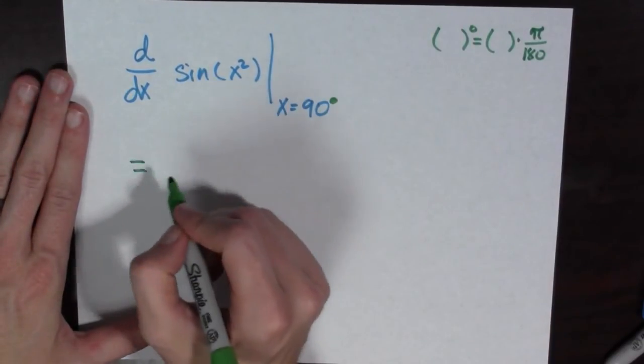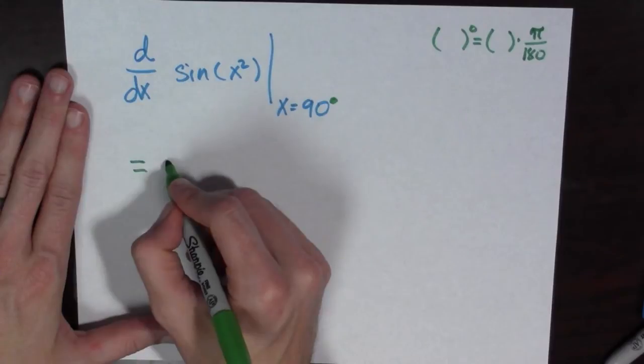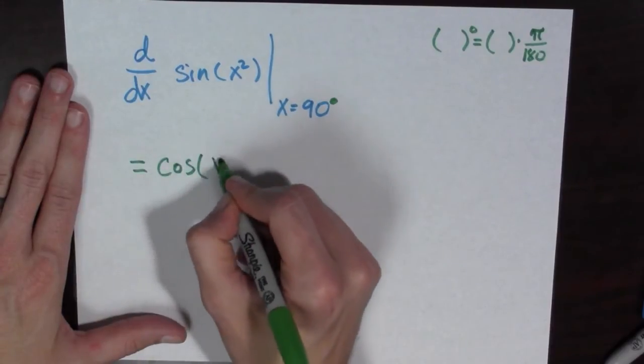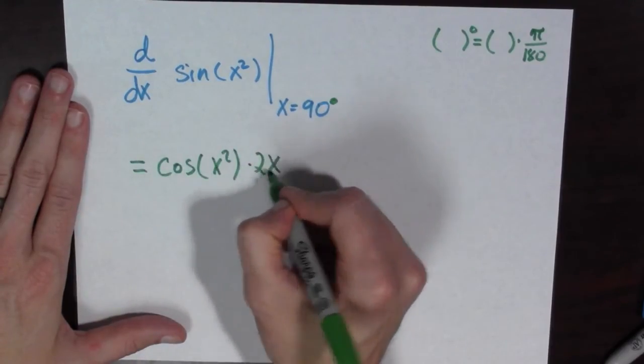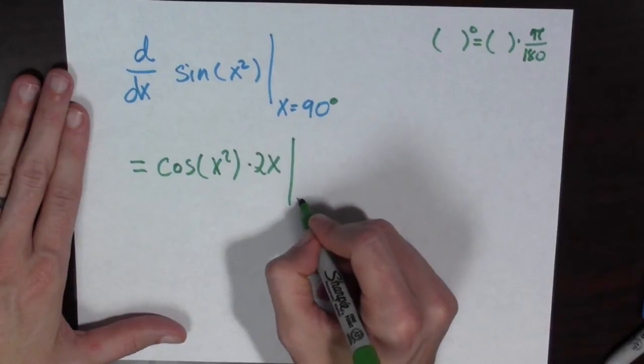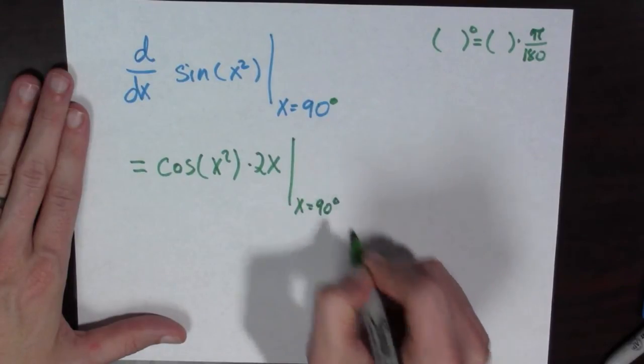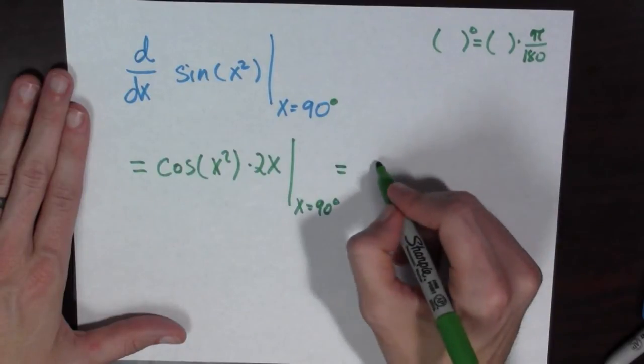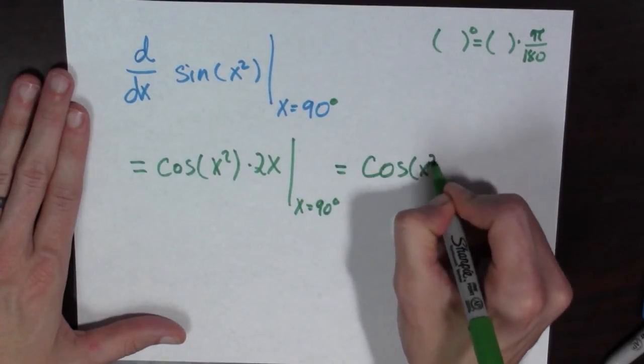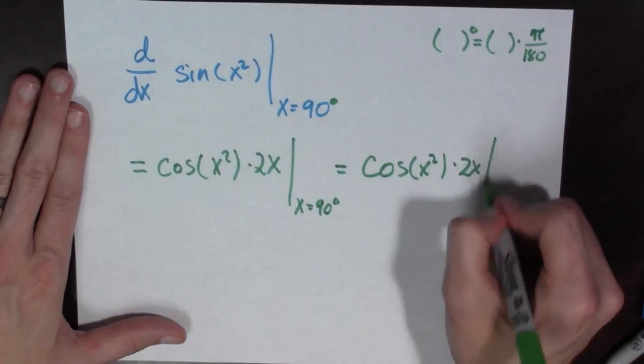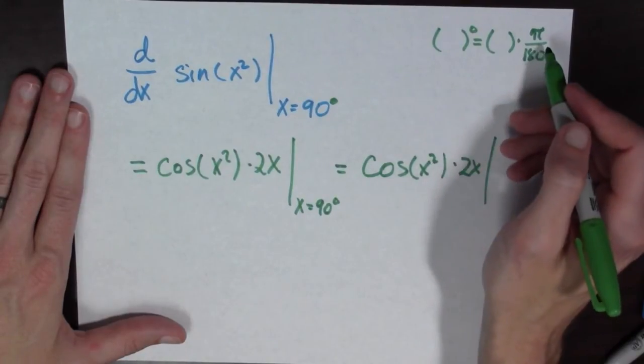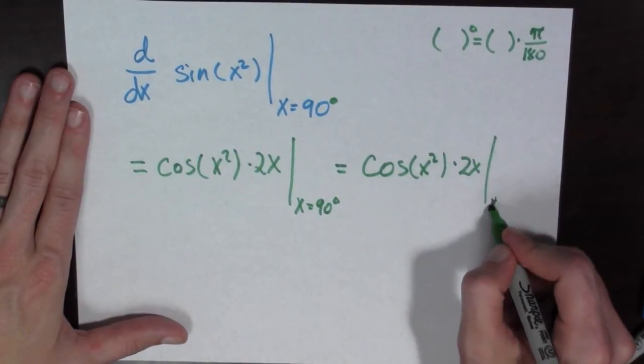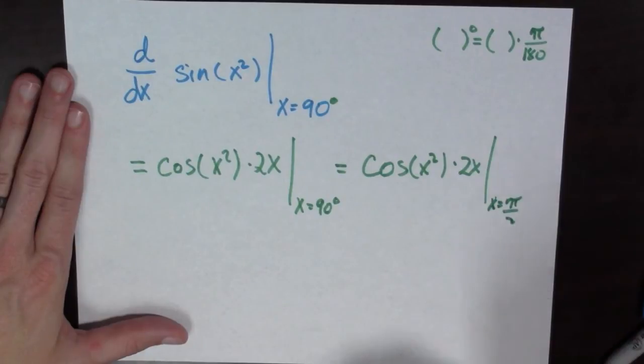And let's see what happens here. So now when I take my derivative, I'm going to get cosine of x squared times 2x, evaluated at x equals 90 degrees, but what is 90 degrees equal to? This is cosine of x squared times 2x evaluated. Well, 90 times pi over 180, that's x equals pi over 2.